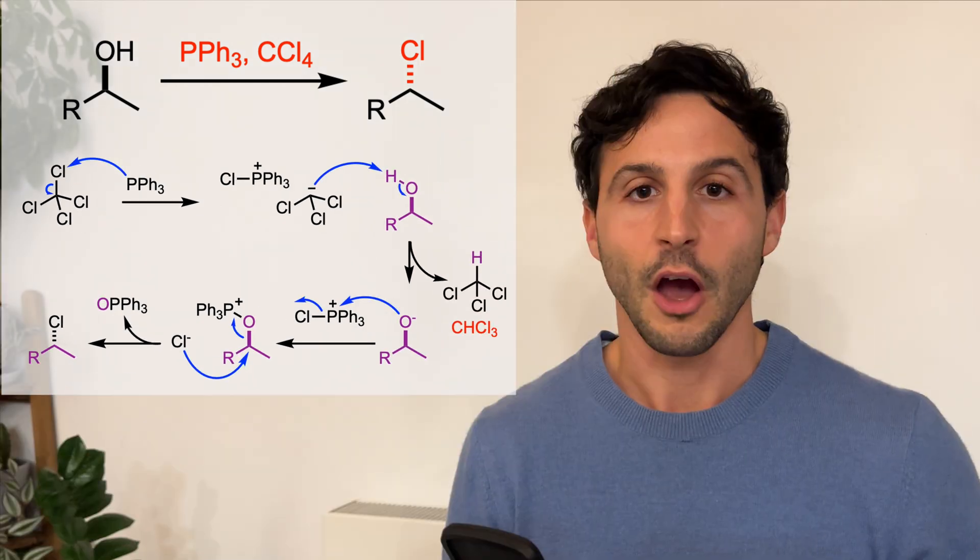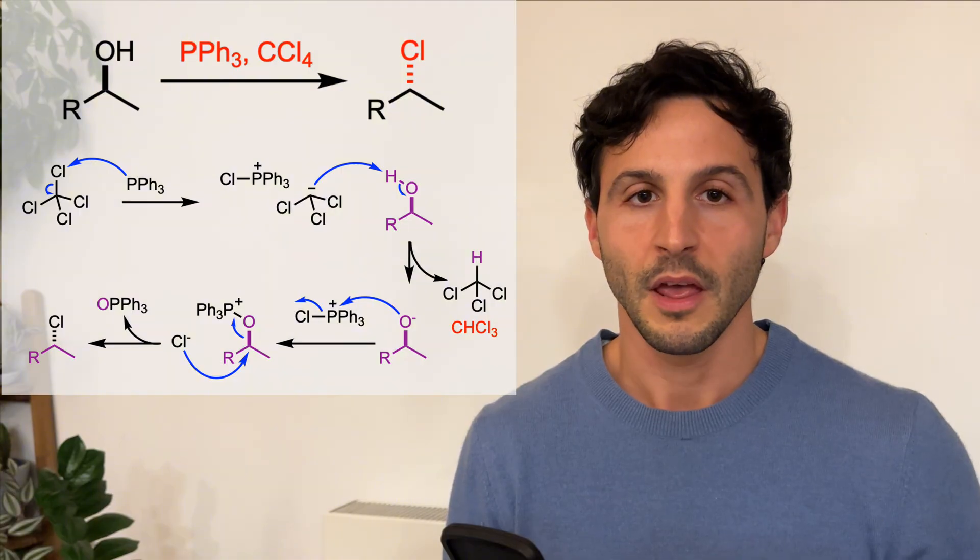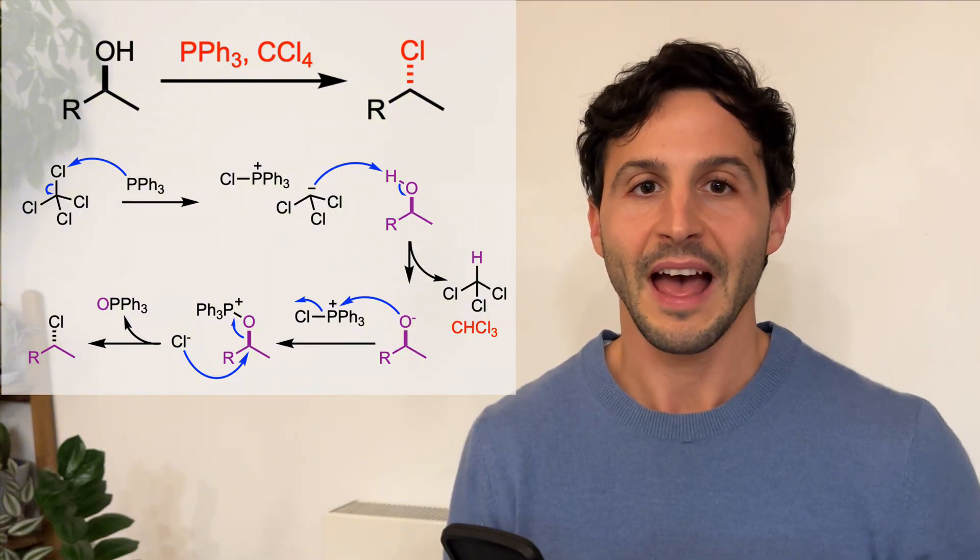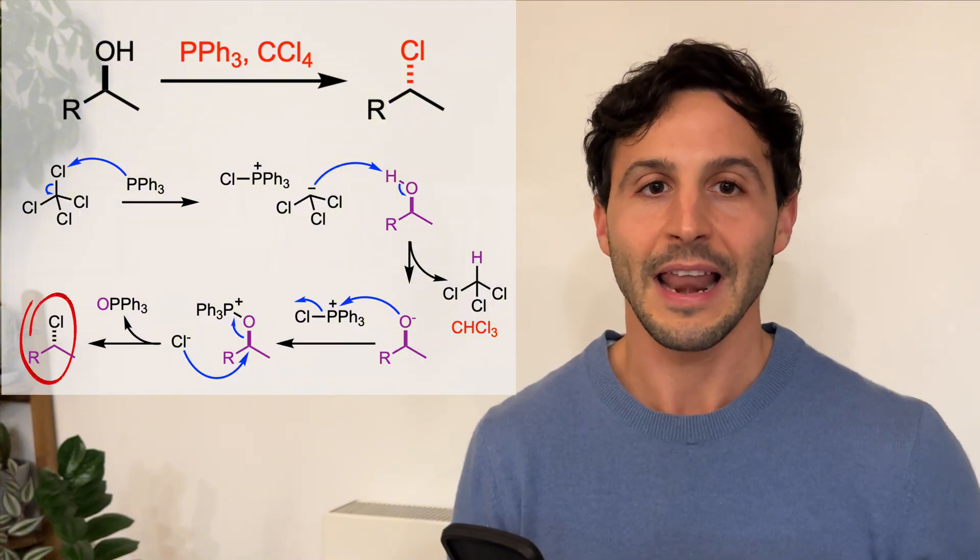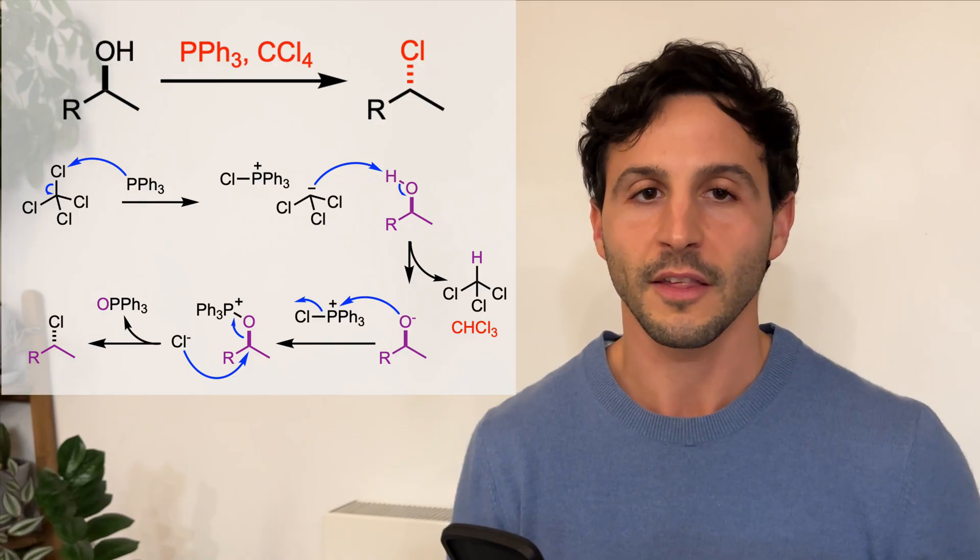This step makes the oxygen a good leaving group, which is displaced by the halide to form an alkyl halide and triphenylphosphine oxide.